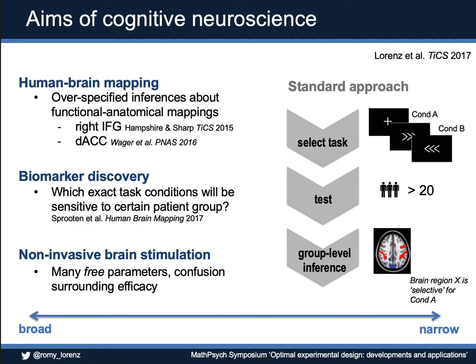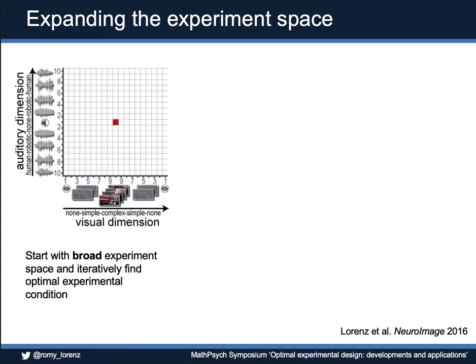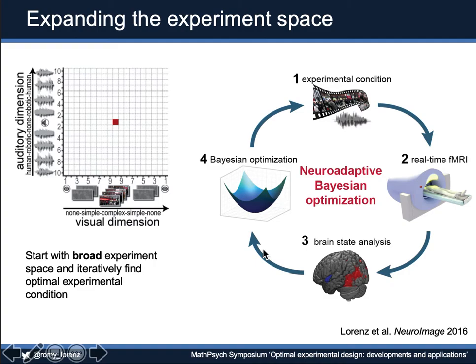To address those questions, over the course of my PhD, I developed this technique where we thought: let's just not start with a pre-selected task condition, but let's span a huge experiment space and then search through the space in real time to iteratively find the optimal experimental condition. We're doing this in a closed-loop approach using a machine learning approach called Bayesian optimization.